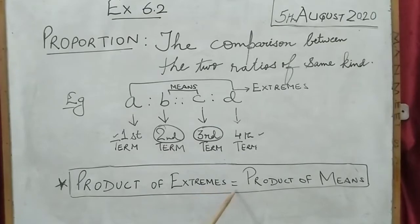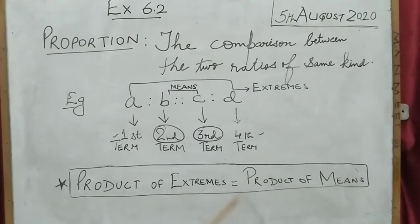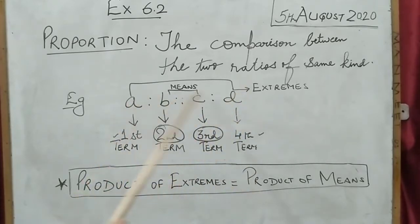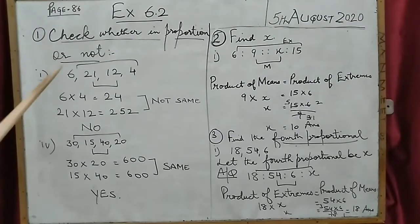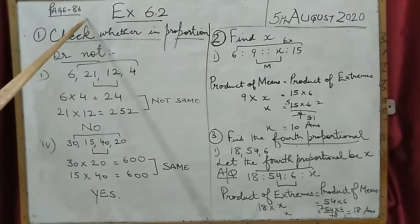In this whole exercise we are going to use only one formula: product of extremes is equal to product of means. If the product of the extremes and the product of the means are equal, it means our sum is in proportion. Product means when we multiply two numbers, the answer we get is known as the product. So if we multiply A and D on one side and B and C on the other side, and the answer is the same, then it is in proportion. If not, the numbers are not in proportion.